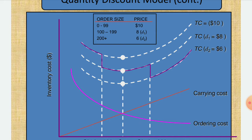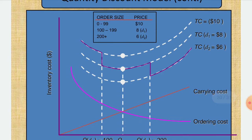In the graph, a box shows order size and price. If order size is 0 to 99, the price is $10. If order size is 100 to 199, the price is $8. As order size increases, price decreases. If order size is more than 200 quantities, the price is $6, indicated by D1 and D2 respectively.